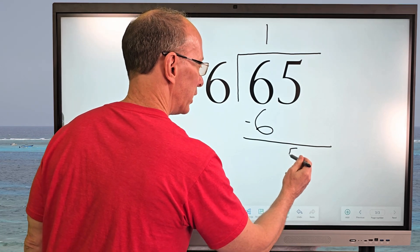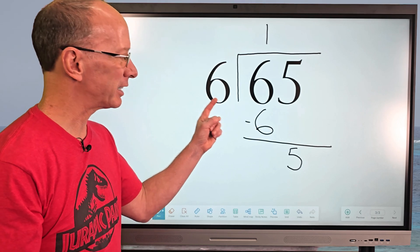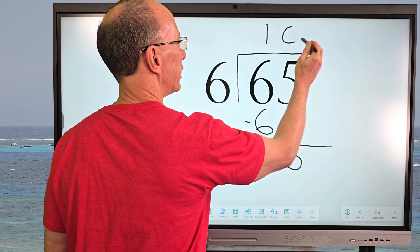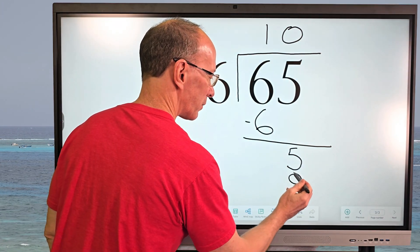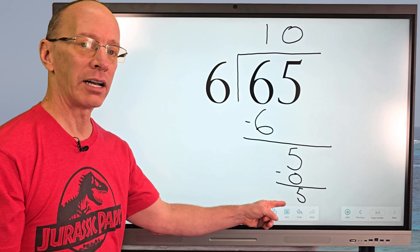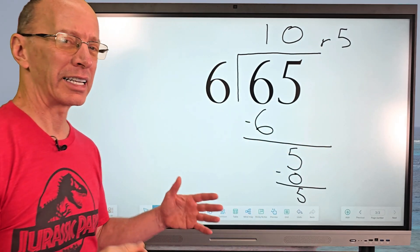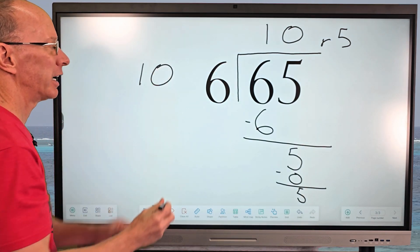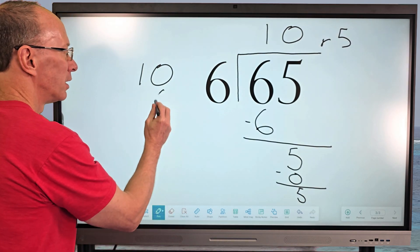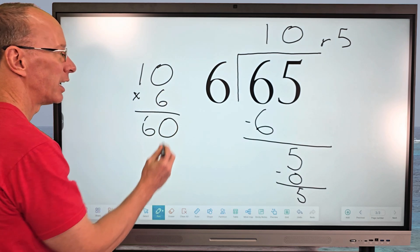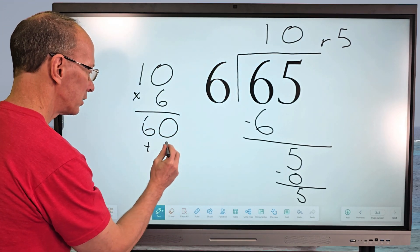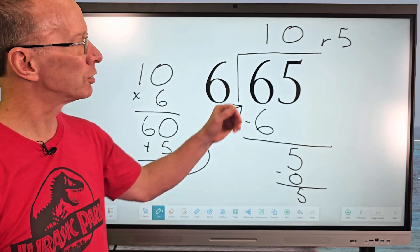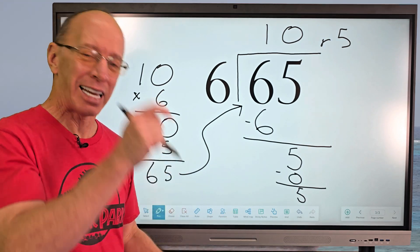I bring the next number down, which is 5. Now how many times can I put 6 into 5? I can't — but there's a digit in there, and that would be 0. Zero times 6 equals 0. I subtract and I have a remainder of 5. Let's check: I take 10 and multiply 6 times 10, which equals 60. Then I add my remainder of 5, giving me 65. That matches! So 65 divided by 6 equals 10 with a remainder of 5.